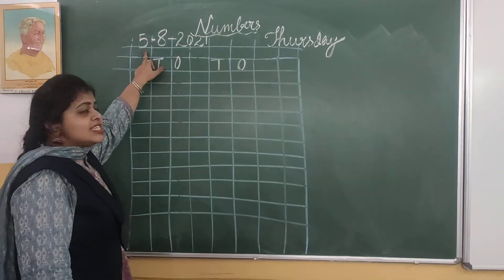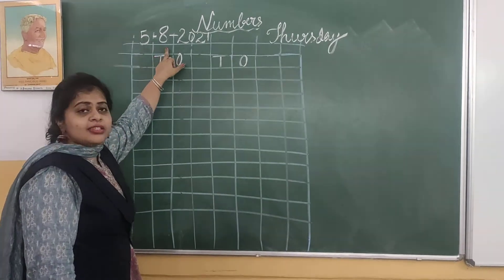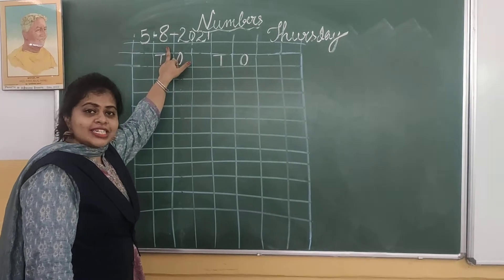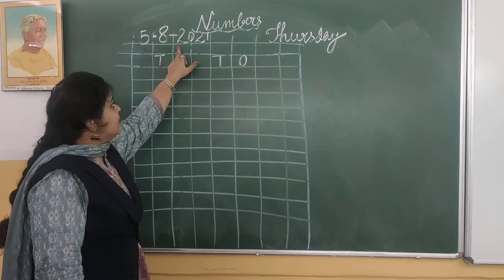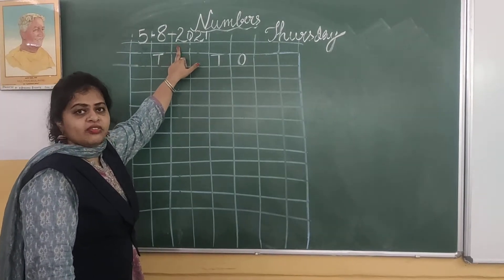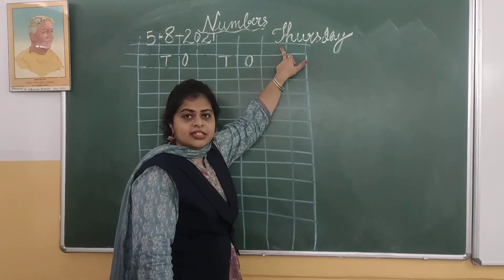Today's date is the 5th, and we are in the month of August. August is the 8th month, and we are in the year 2021. Today is Thursday.